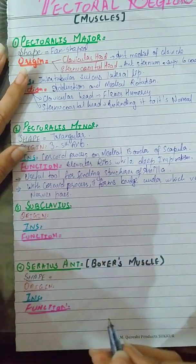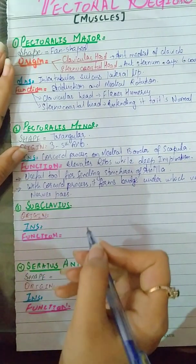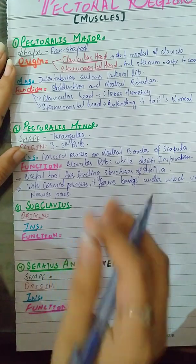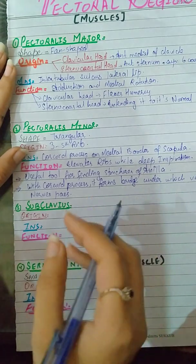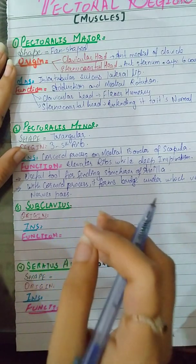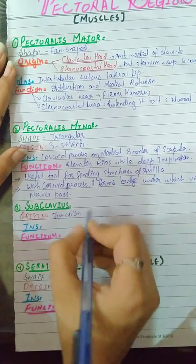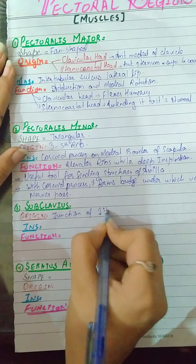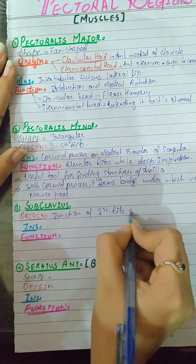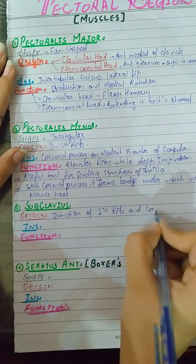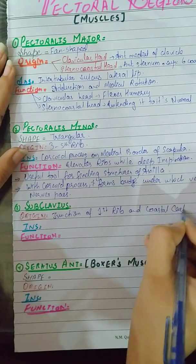Then our third muscle is subclavius. The subclavius originates from the junction of the first rib and its costal cartilage.